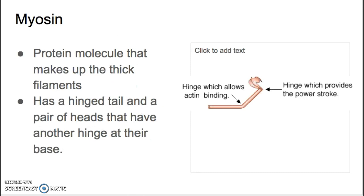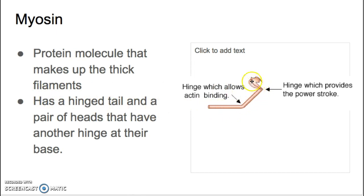We'll start with myosin. Myosin is the thick filament, and it has a unique structure. It has a long tail with a hinge in the middle, and then it has two heads with another hinge. This allows it to change shape or conformation — conformation being a fancy way of saying shape when talking about different shapes of molecules.